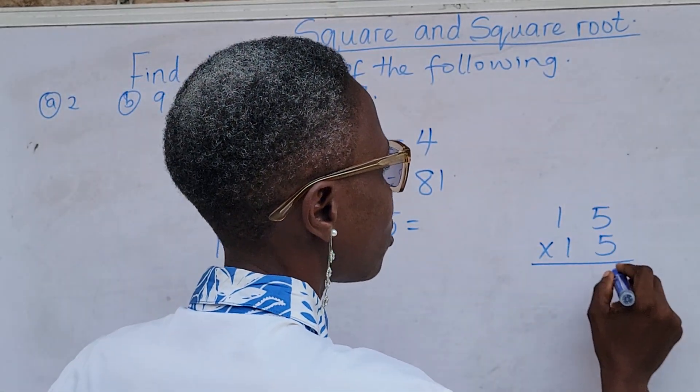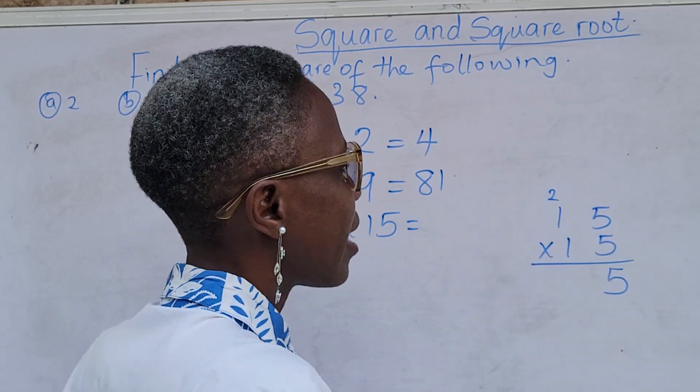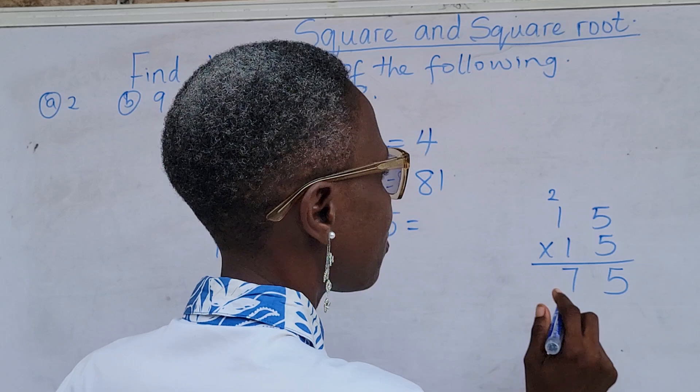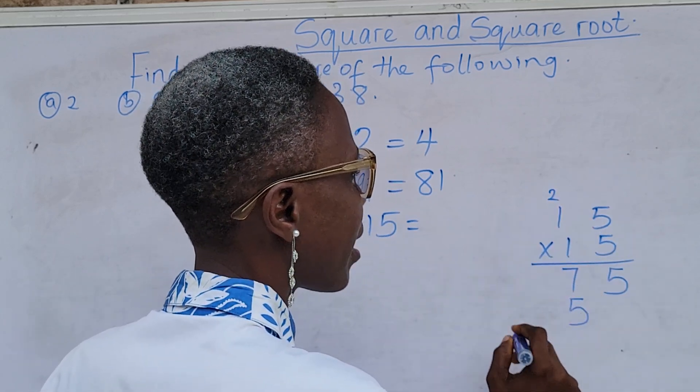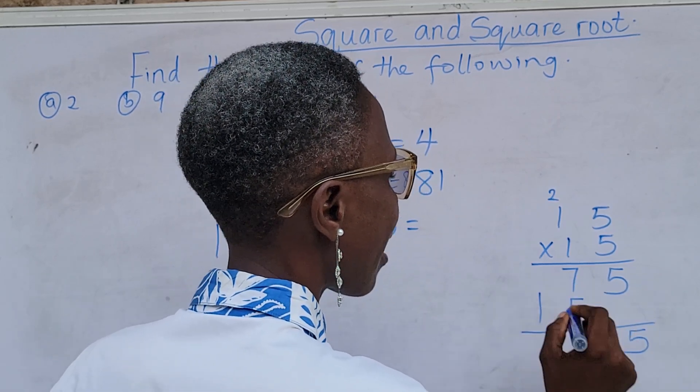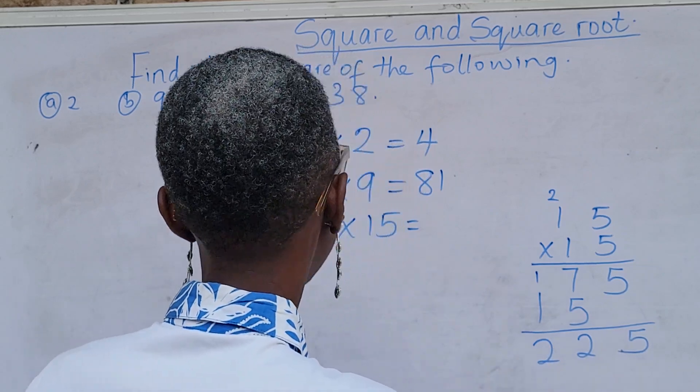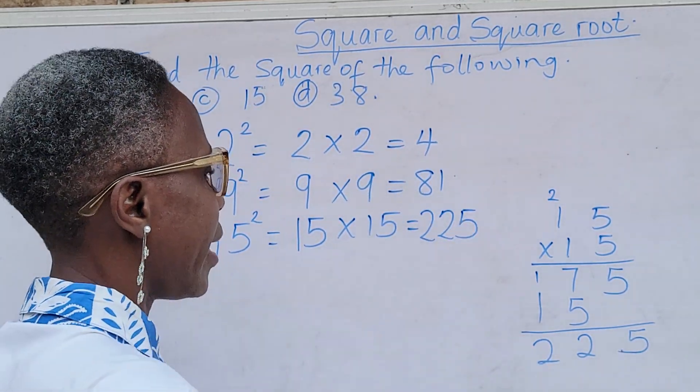5 times 5, 25. 5 times 1, 5 plus 2, 7. Then, 1 times 5, the answer will be written under the number you are using to multiply, 5. 1 times 1 is 1, then you will add up. So we have 12 and then we have 225. So 15 square is 225.